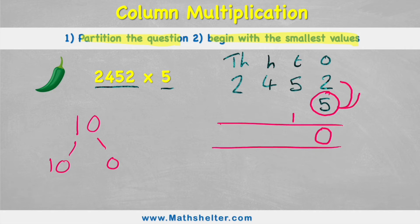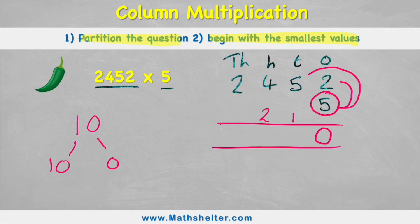Now I can do my five multiplied by five. Five times five is 25. But remember, I've got this one to consider now, so I'll add that on as well. Five times five is 25, add my one is 26. And again, I'm going to use exactly the same method — carry the two across, put my six in the answer column.